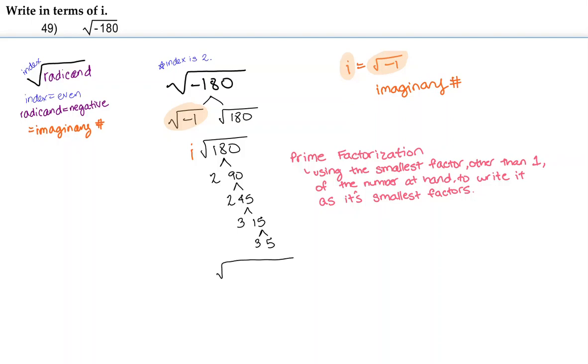Now we have the square root of 2 times 2 times 3 times 3 times 5. And then we're going to bring down our i.